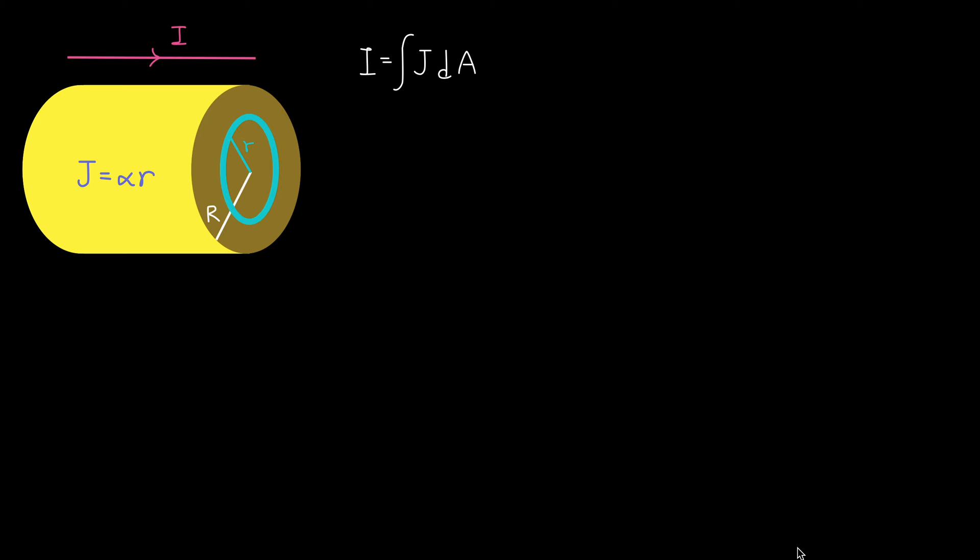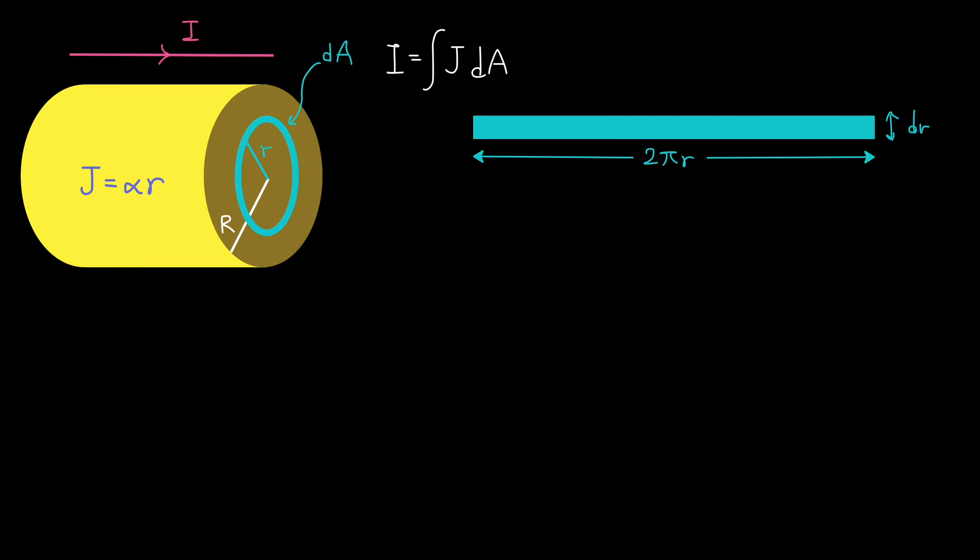So the idea is to multiply J by the area of each ring and add all those products together, which is basically doing an integral. Now, let's express the area of such ring in terms of the given variables. Imagine cutting the ring-shaped area element from one point and then opening it up. What would it look like? It would look like a very thin, long rectangle.